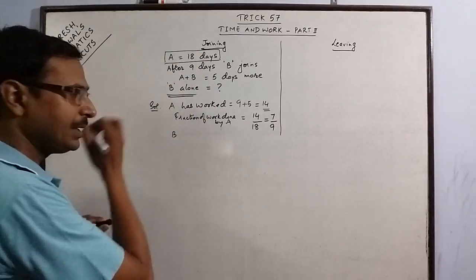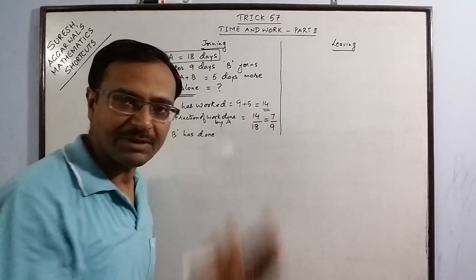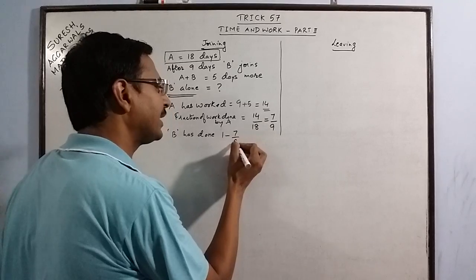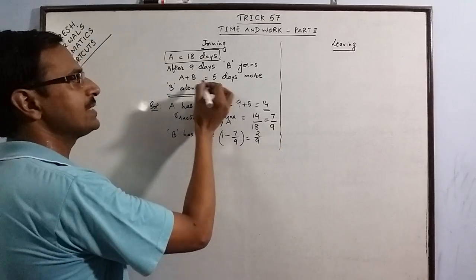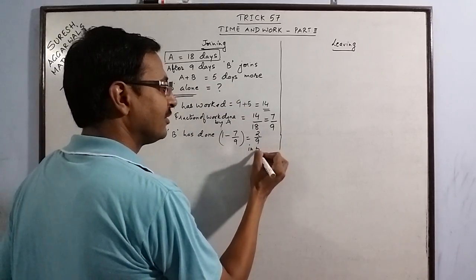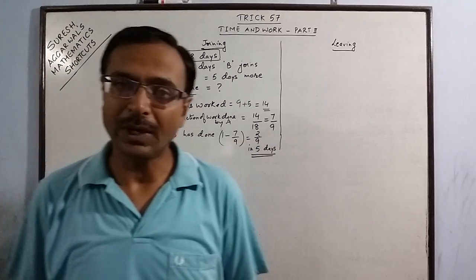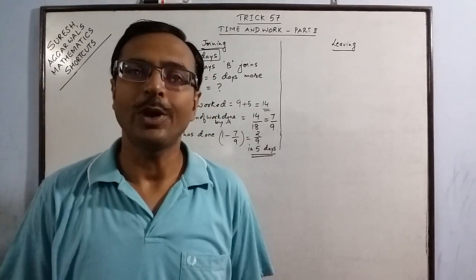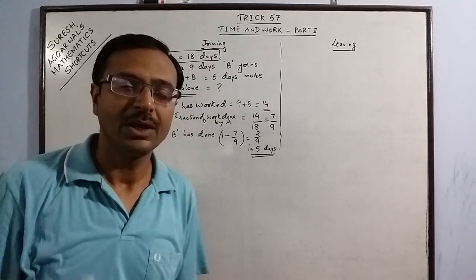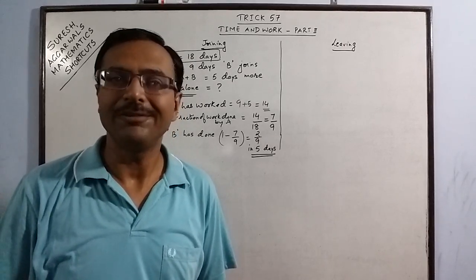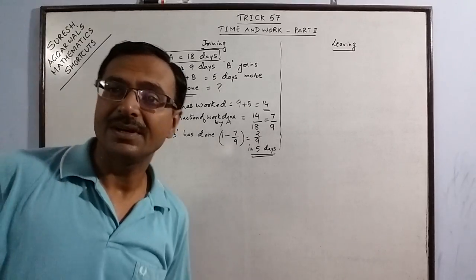So B has done the remaining work: 1 minus 7/9, which equals 2/9 of the work. This 2/9 of the work was done by B in 5 days, because B worked only for 5 days. This is the second step needed to arrive at the final result. We now have the equation: B worked 5 days and completed 2/9 of the total work.